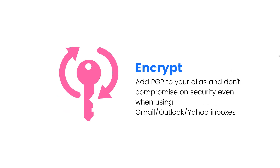The fifth use case is encryption. You can add PGP, which is a way to protect and encrypt your email content, to your alias. This means you can use it even when your main inbox is on Gmail, Outlook, or Yahoo, which are popular for being unsecured email inboxes. So instead of paying for a custom email hosting company just to have PGP, you can use whatever mailbox you want and still have the privacy benefit thanks to aliases.